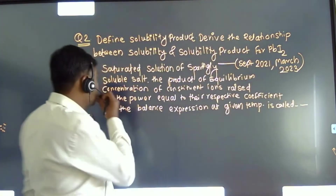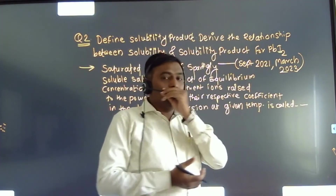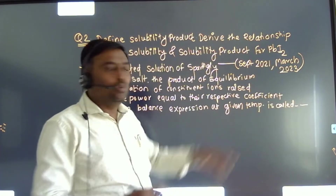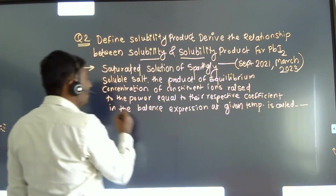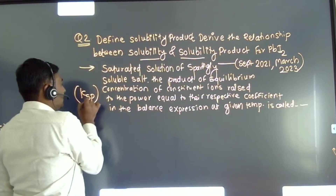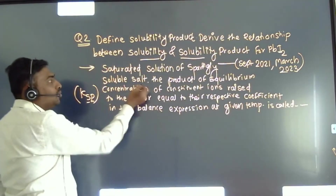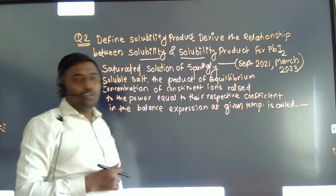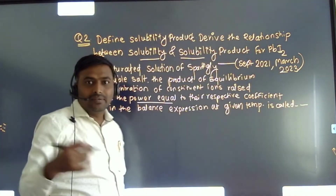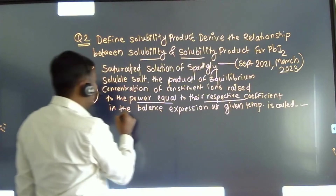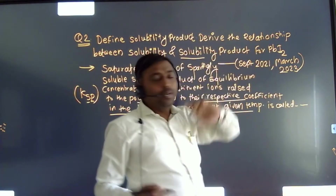The second question asks us to define the solubility product and derive the relationship between solubility and solubility product of PbI₂. The solubility product, denoted by Ksp, is the product of the equilibrium concentrations of the constituent ions of a sparingly soluble salt, each raised to the power of their respective stoichiometric coefficients in the balanced equation, at a given temperature.